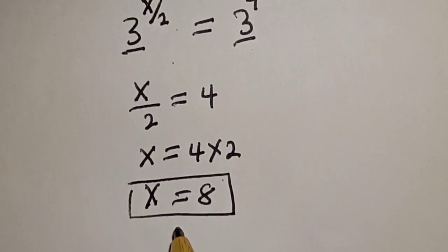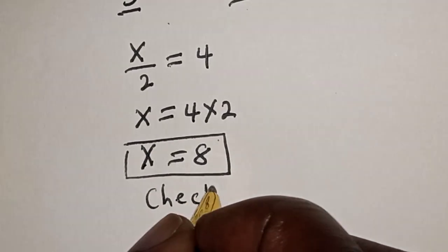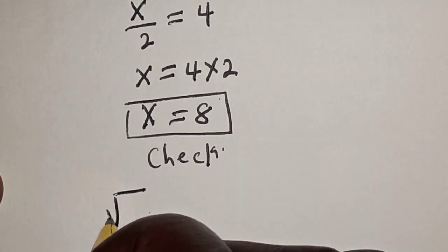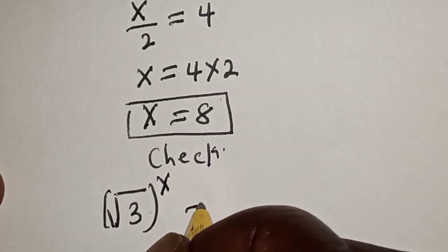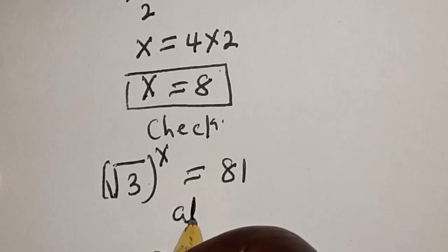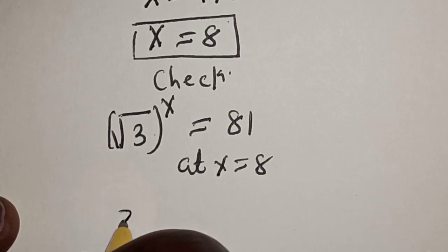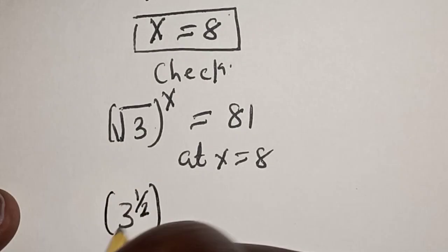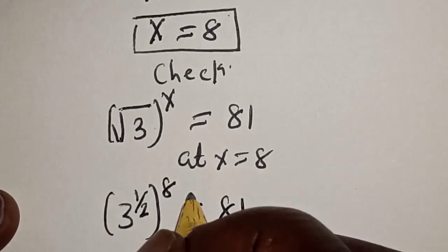We can check to confirm if our answer is right or wrong. Let's check. We have the given equation: root of 3 raised to power x must be equal to 81. Now at x is equal to 8, so we have 3 raised to power 1 over 2 raised to power of 8 is equal to 81. Let's see.